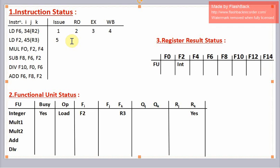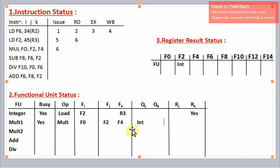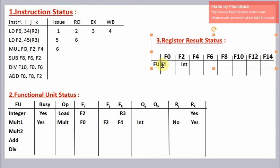In the sixth clock cycle, we can read operands of the second instruction. Also in the sixth clock cycle, the mul instruction can be issued. So mul1 will now be busy. The operation to perform is multiplication. Destination register is f0, source registers are f2 and f4. Now f2 is not yet present — it will be present when the integer unit writes the result in f2. So the flag for fj will be no. Since f4 is present, the flag for fk will be yes. Mul1 is going to write f0.